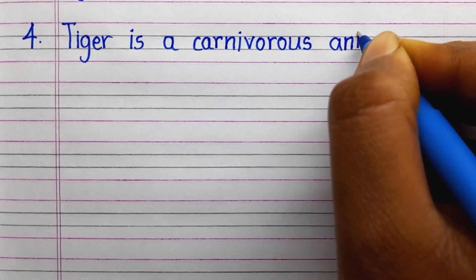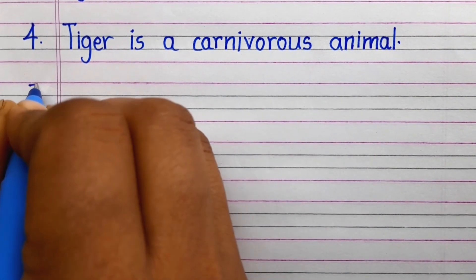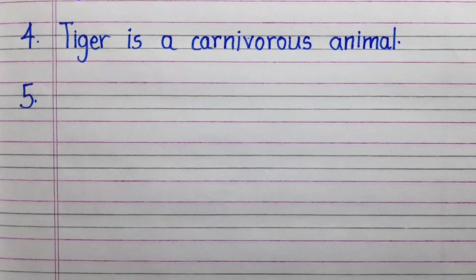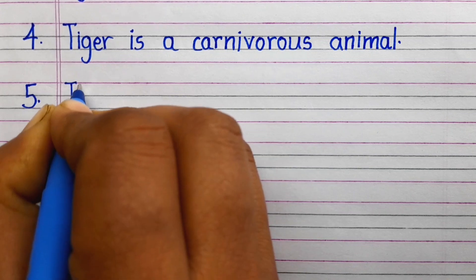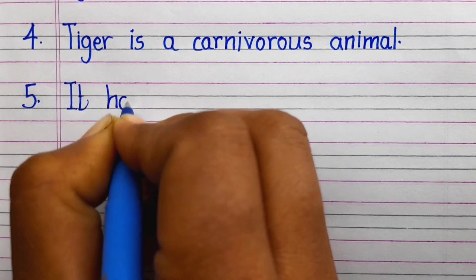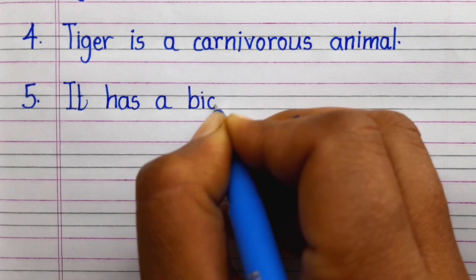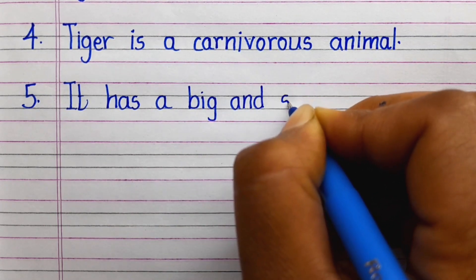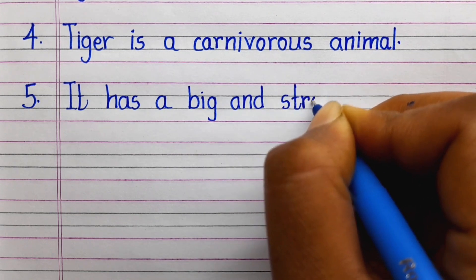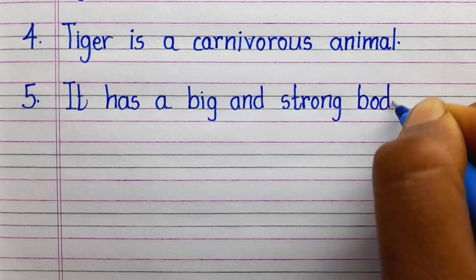Fourth line: Tiger is a carnivorous animal. Fifth line: It has a big and strong body.